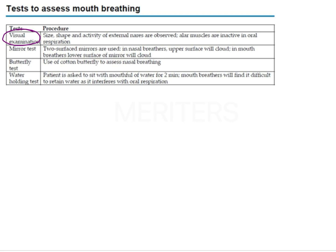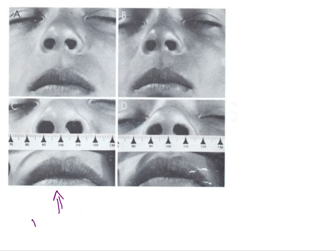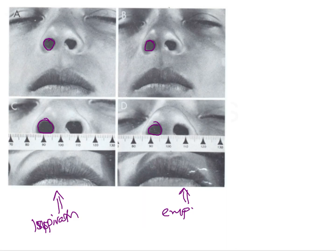In the visual examination, the size, shape, and activity of the external nares are observed. This row shows a patient during inspiration and this row shows a patient during expiration. If you observe the size of the external nares in figure A and figure B, the size of the nares remains the same. Whereas in figure C, where the patient is inspiring, the size of the nares actually increases during inspiration and then reduces during expiration.